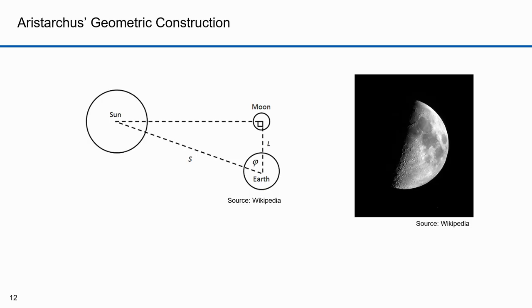Aristarchus knew that during a quarter moon, the moon forms a right triangle with the sun and the Earth. A quarter moon appears half-lit to us. By observing the angle between the sun and moon, the distances to the sun and moon could be deduced. We'll use trigonometry to solve this problem, though that wasn't available to Aristarchus — he used something similar.